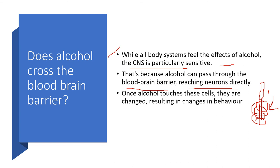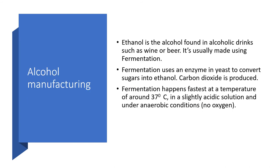Ethanol is the alcohol found in alcoholic drinks such as wine and beer, usually made using fermentation. Fermentation uses an enzyme in yeast to convert simple sugars into ethanol, and during the process carbon dioxide is produced. Fermentation happens fastest at a temperature of around 37 degrees Celsius, in a slightly acidic solution and under anaerobic conditions — that means when no oxygen is present.